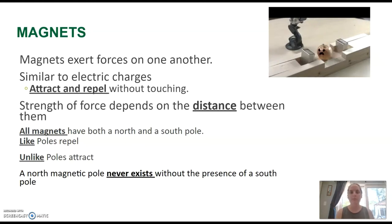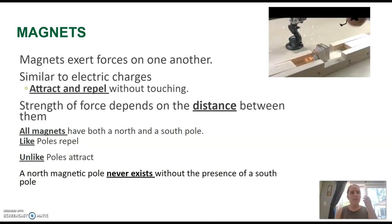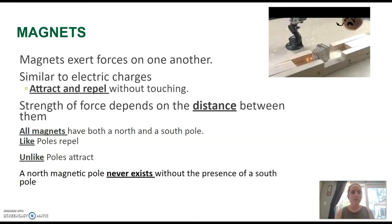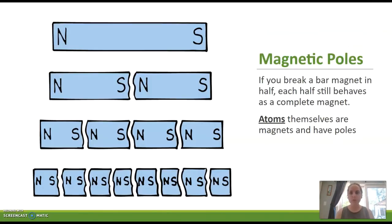That is what's really different between our electric forces. Our charges can exist on their own, but our magnetic poles cannot. If you were to ever break a magnet, what you're going to have is more magnets. That's because the magnetic force is dependent upon the atoms themselves and their spin.